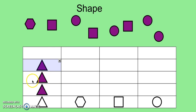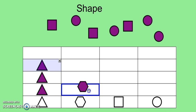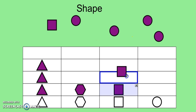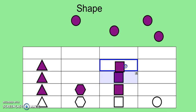One, two, three. I have three triangles. Now let's group our hexagons. One. There is one hexagon. Now let's group our squares. One, two, three. There are three squares.